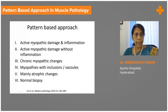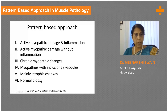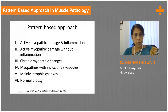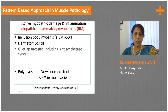The first category is where you have active myopathic damage and inflammation. The second is active damage without inflammation. The third category is more chronic. When you have certain inclusions and vacuoles, that would fall into category four. If it's predominantly atrophic, then that comes into category five, and if you have a normal muscle, that would be category six. So I'll just deal with each of these categories briefly.